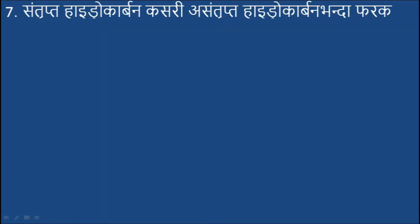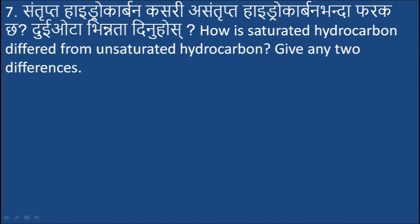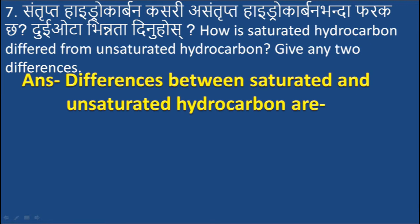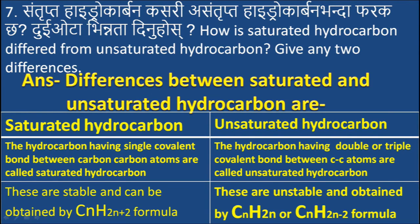Question 7: How is saturated hydrocarbon different from unsaturated hydrocarbon? Give any two differences. Answer: Saturated hydrocarbons have single covalent bonds between carbon-carbon atoms; they are stable and follow the CₙH₂ₙ₊₂ formula. Unsaturated hydrocarbons have double or triple covalent bonds between C-C atoms; they are unstable and follow the CₙH₂ₙ or CₙH₂ₙ₋₂ formula.